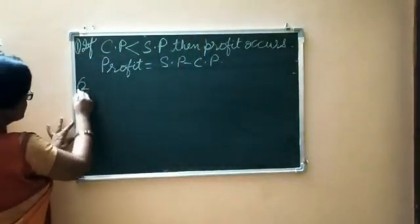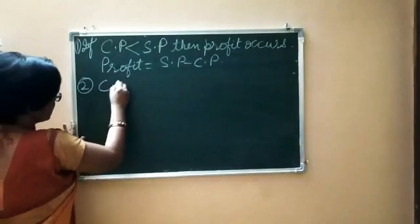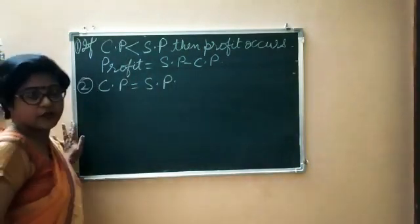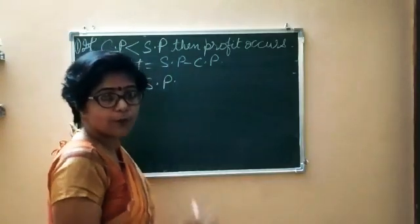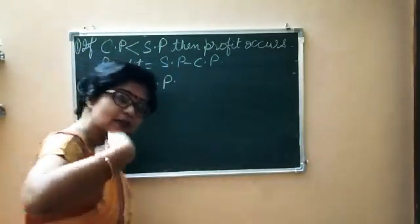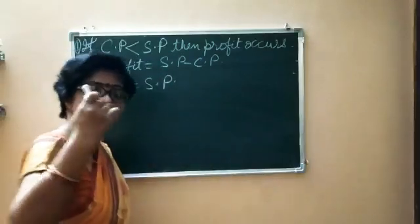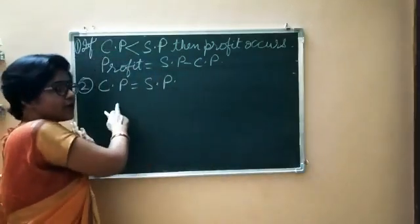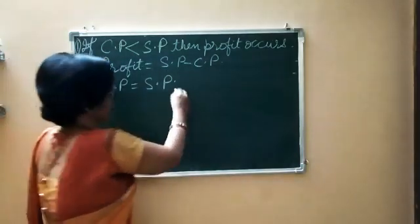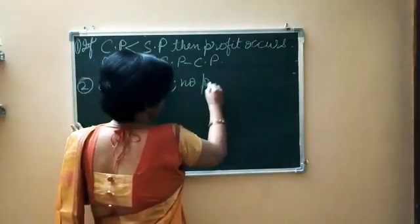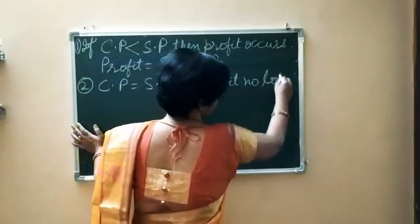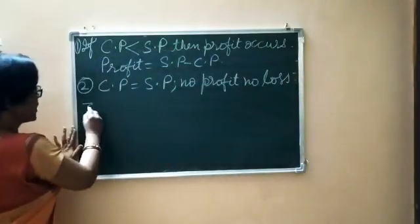Case 2: CP is equal to SP. Suppose we have bought a copy at rupees 20 and we are also selling the copy at the same price, rupees 20. Then we have no profit and no loss.